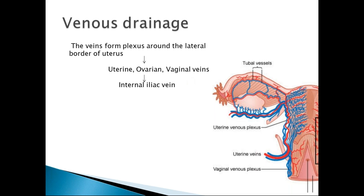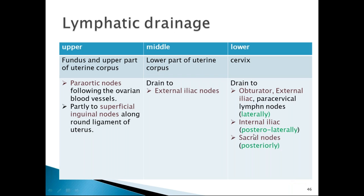Venous drainage of the uterus forms a plexus along the lateral border, draining into uterine, ovarian, and vaginal veins, and finally into the internal iliac vein. Lymphatic drainage of the uterus is divided into three zones.